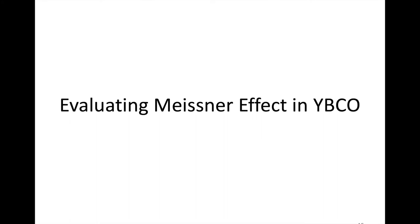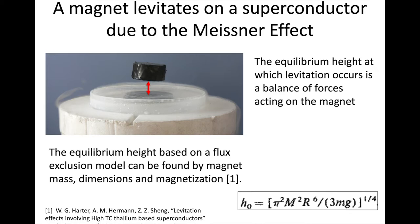That allows us to get the oxygen content. The next thing is to look at the Meissner effect — we want to evaluate the actual superconducting properties of our YBCO. We're going to have some type of tray, put the superconductor in that vessel, and cool down our YBCO to the boiling point of liquid nitrogen, so basically put it in liquid nitrogen. We assume we're below the critical temperature, and then place a magnet above the superconductor and observe the levitation.